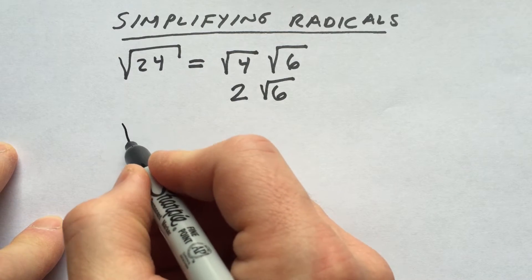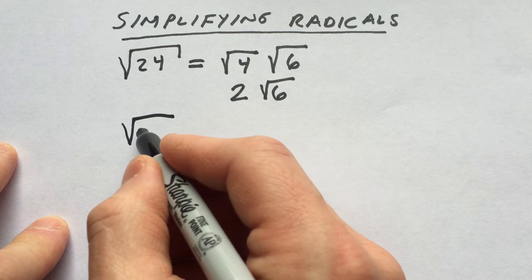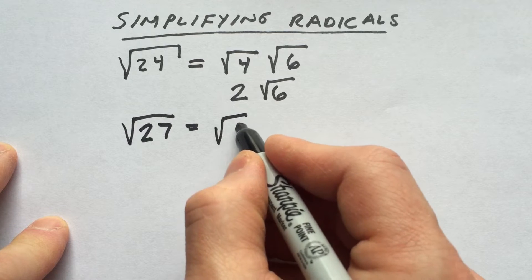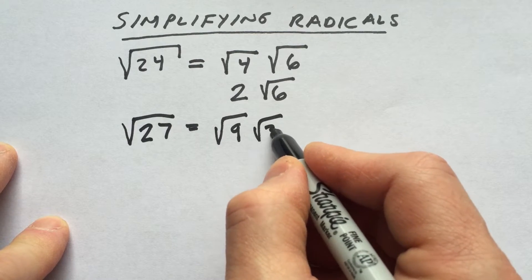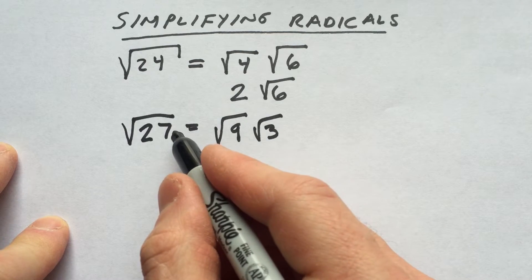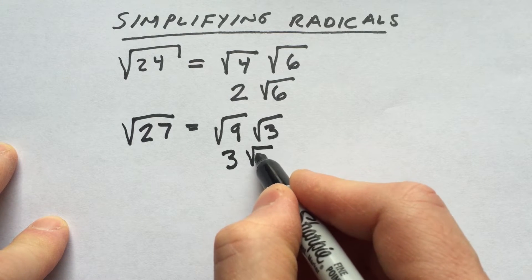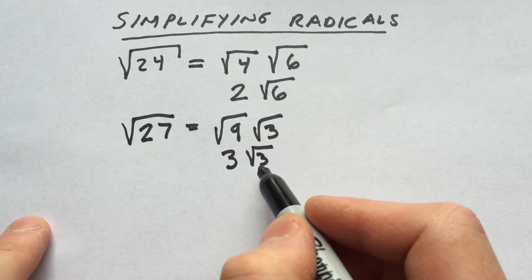Let's look at another example. Say we have the square root of 27. 27 we know is the square root of 9 times the square root of 3, because 9 times 3 is 27, but the square root of 9 is 3, and we have the 3 here left over, so this is not a perfect square.